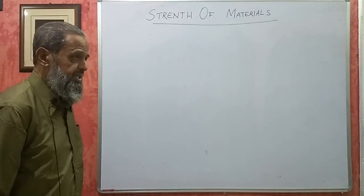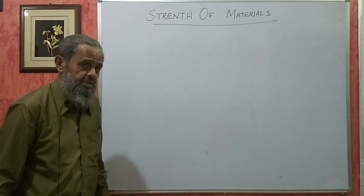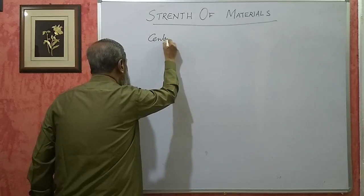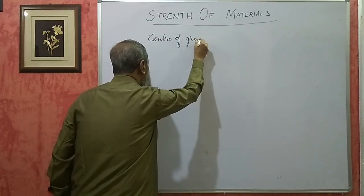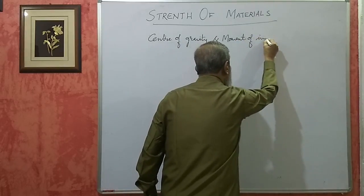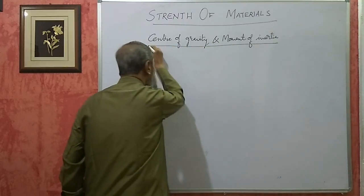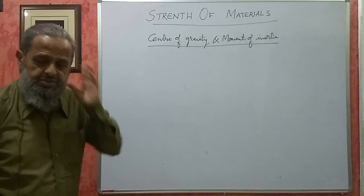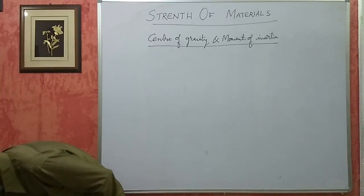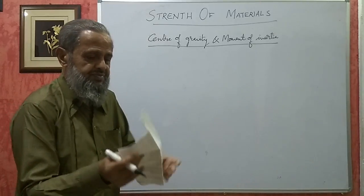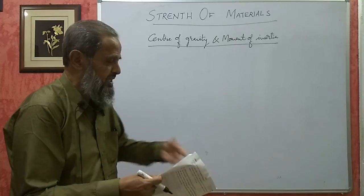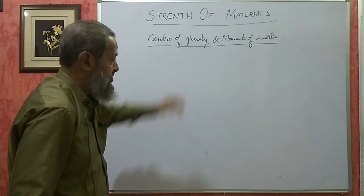We will take up the discussion of the second unit in Strength of Materials, or what is popularly called SOM. The second unit is Center of Gravity and Moment of Inertia. Center of gravity of a lamina or a solid — it may be either a lamina or a solid. For example, this is called a lamina — a rectangular lamina. It may be triangular, square, circular, any shape. Its center of gravity and moment of inertia are to be found out.